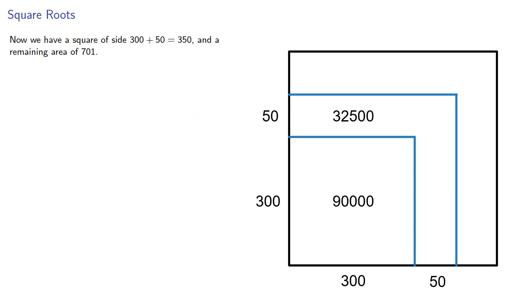Now we have a square with side 300 + 50 = 350 and a remaining area of 701.